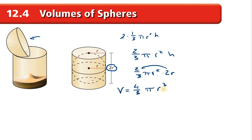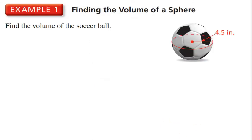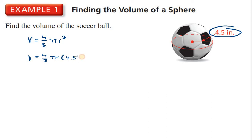So the volume is four thirds π r cubed. You can add this to your notes: the volume of a sphere is four thirds π r cubed. Let's use this to find the volume of a soccer ball. Our formula is four thirds π r cubed. All we need is the radius, so that is four thirds π times 4.5 cubed. We get 121.5π, or approximately 381.7 inches cubed.